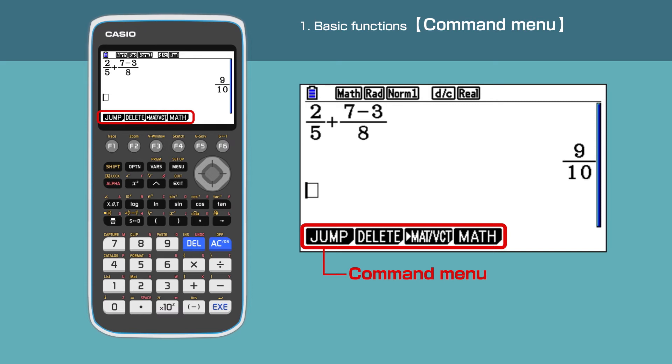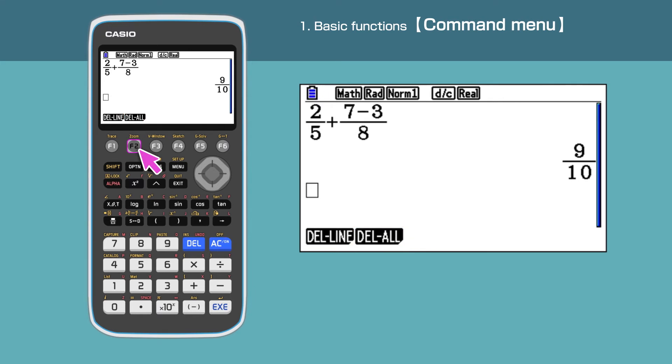For example, to delete your work, press F2 under the DELETE command. There are two options. To clear all previous calculations, press F2 to delete all, then press F1 to confirm. The display is cleared.